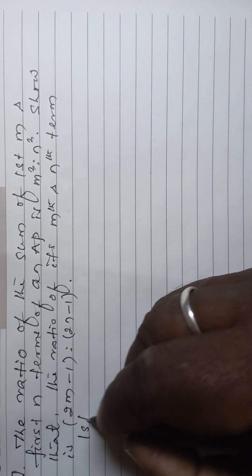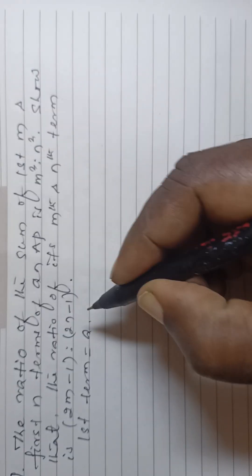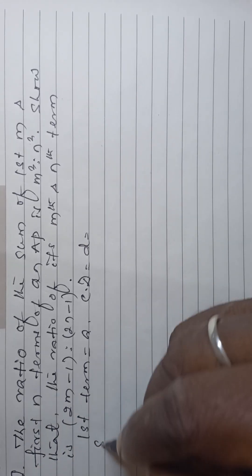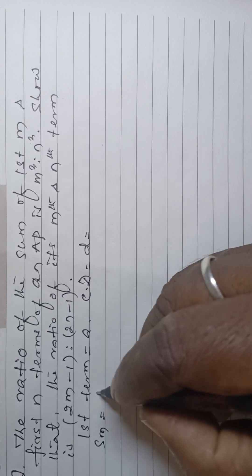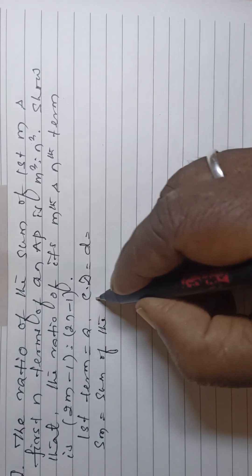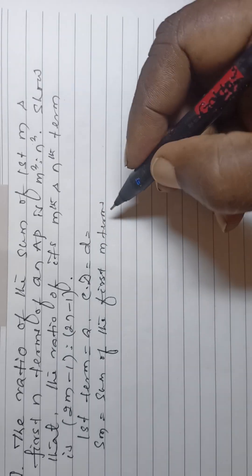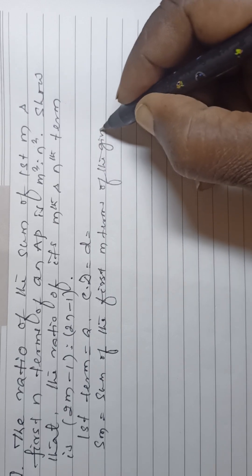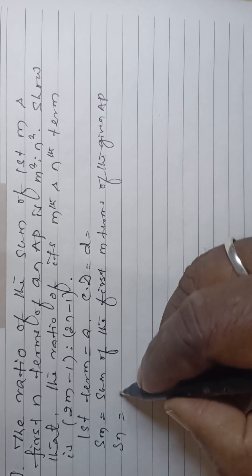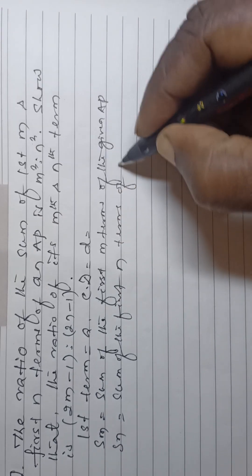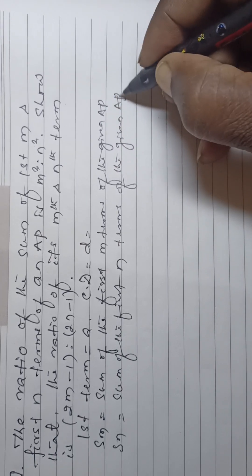Let the first term be a and common difference be d. Then Sm is equal to the sum of the first m terms of the given AP, and Sn is equal to the sum of the first n terms of the given AP. Then Sm by Sn is equal to m² by n².